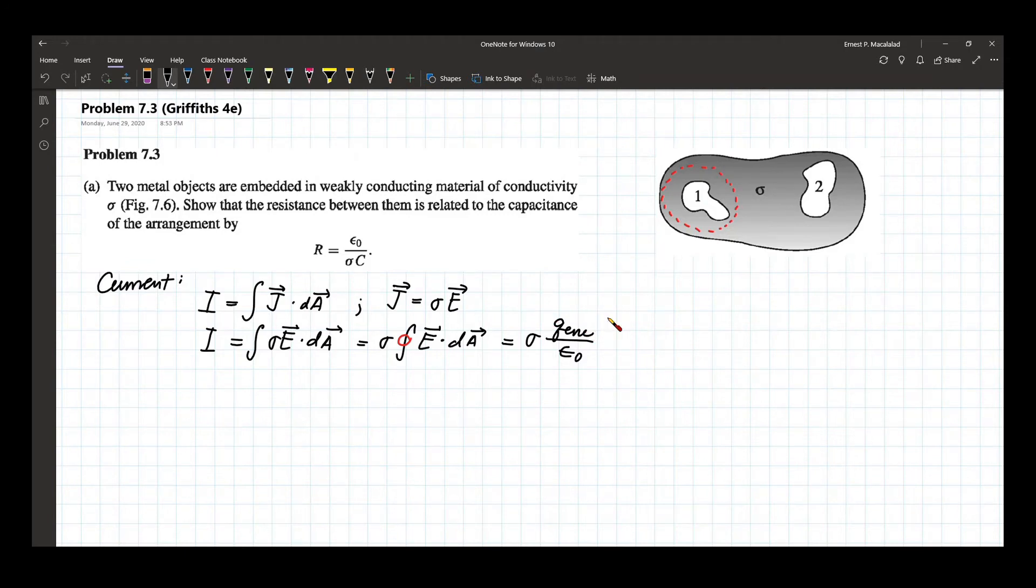So whatever this charge is here, the negative charge, a negative of that is the charge in the other metal. Because we have a capacitor here.